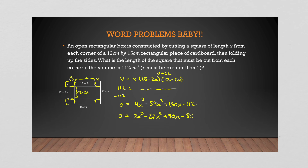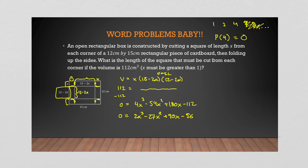Using the rational root theorem, we look at factors of 56 over factors of 2. We get quite a few candidates, but consider the context: if x gets bigger than 6, the width becomes zero or negative. So we only need to test 1, 2, and 4 — no negatives. Running through the remainder theorem, p(4) = 0. We do synthetic division with coefficients 2, −27, 90, −56, and get remainder 0.